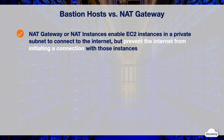NAT gateway or NAT instances enable EC2 instances in a private subnet to connect to the internet, but prevent the internet from initiating a connection with those instances. In other words, you cannot connect to a NAT gateway or NAT instance remotely using SSH and use it as a jump server to connect to other instances in the private subnet.